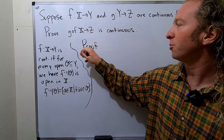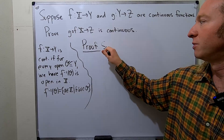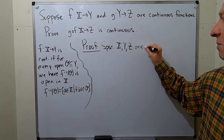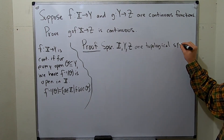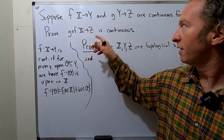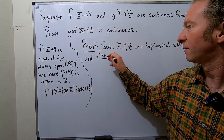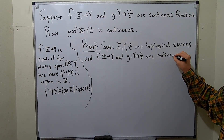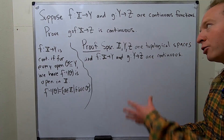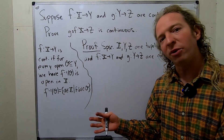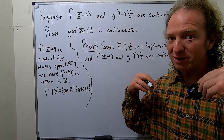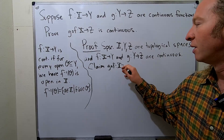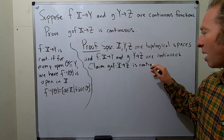Proof. To do a formal proof, we'll start by assuming that we have continuous functions. Suppose x, y, and z are topological spaces. And let's also assume that f from x to y and g from y to z are continuous. You're supposed to write down your assumptions — it's really, really important. Now the claim is that the composition is continuous. Claim: g∘f from x to z is continuous. So we're going to apply the topological definition of continuity to the composition.